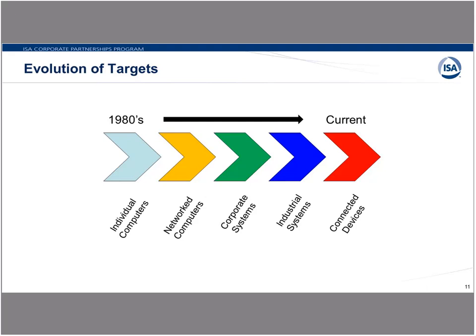As we started connecting corporate systems to industrial systems, the attack surface became that much larger. And now today, with the emergence of the Industrial Internet of Things, we have many, many more potentially connected devices, and that just makes the problem even more complex.